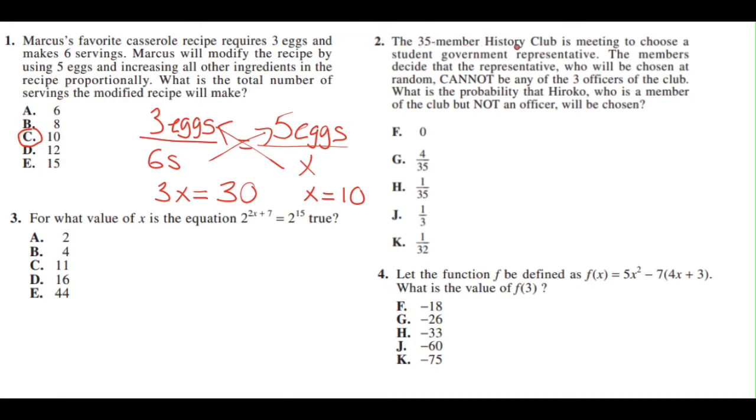Problem 2: The 35 member history club is meeting to choose a student government representative. The members decide that the representative, who will be chosen at random, cannot be any of the 3 officers of the club. What is the probability that Hiroko, who is a member of the club but not an officer, will be chosen?